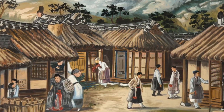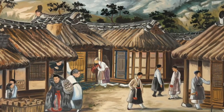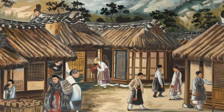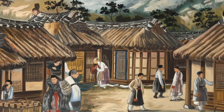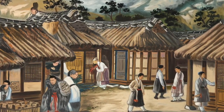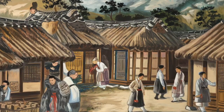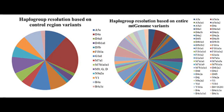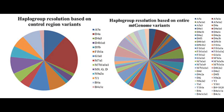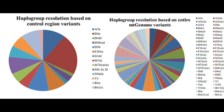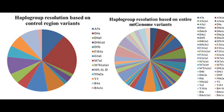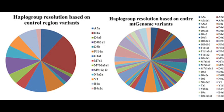The most common mtDNA haplogroup found in Koreans is D4, a genetic marker that is widespread across Northern East Asia. This haplogroup, which appears in nearly a quarter of the Korean population, links Koreans to their Northern neighbors, reinforcing the theory that Korea's early settlers came from the North.